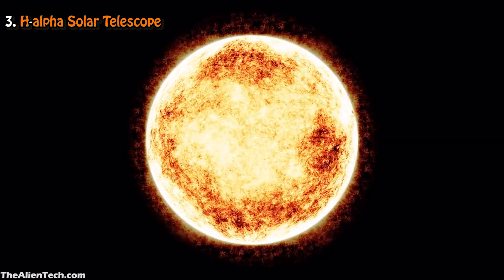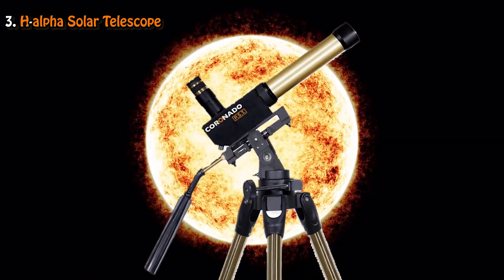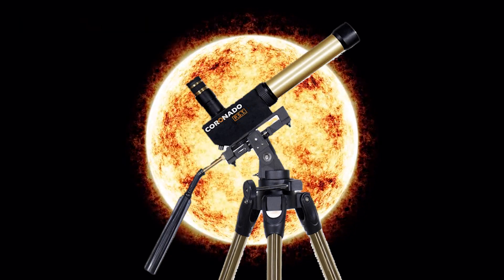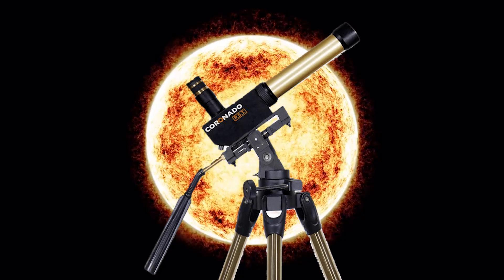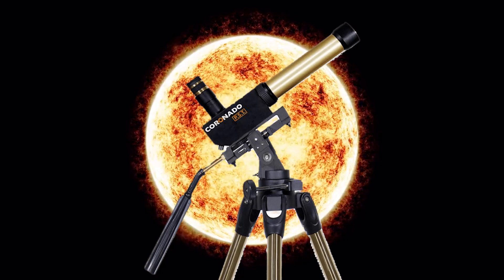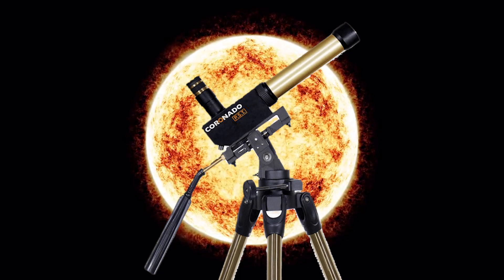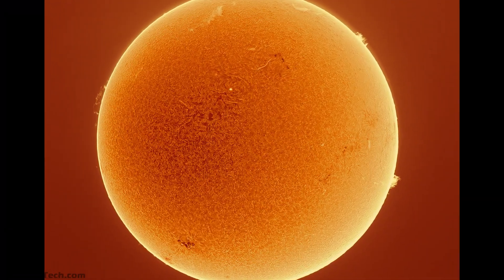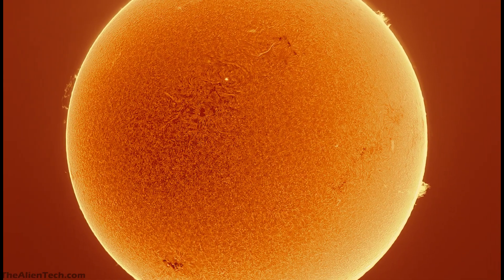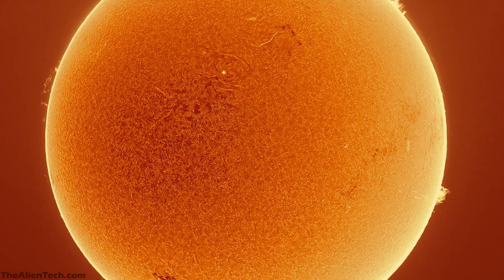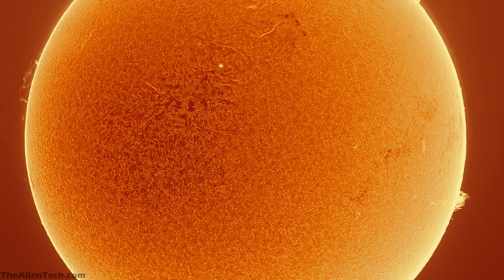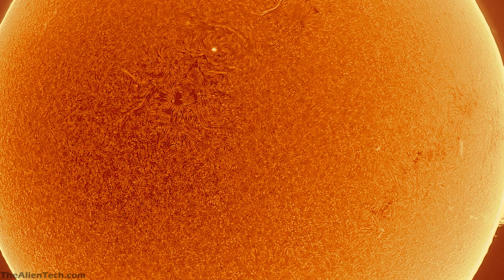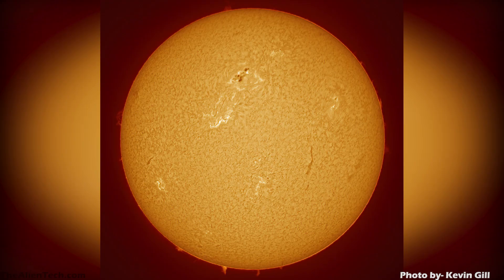The third way of observing the sun is through an H-alpha solar telescope. If you ask any solar astronomer, they will often prefer H-alpha solar telescopes over white light filters or calcium-K filters. H-alpha solar telescopes are expensive, but observers can see more details of the sun. With these telescopes, you can see the sun's changing chromosphere. You will also be able to see the filaments, prominences, plages, and much more.